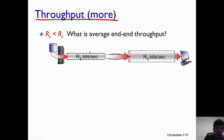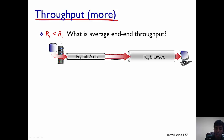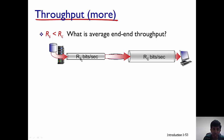Consider the first case where the first pipe (R_s) is thinner than the second pipe (R_c), meaning R_s is less than R_c. The smaller capacity of the first pipe dictates the total amount of fluid that can flow from the server to the client. So the thickness of the first pipe, or the value of R_s, determines the throughput. The average end-to-end throughput in this case is R_s.